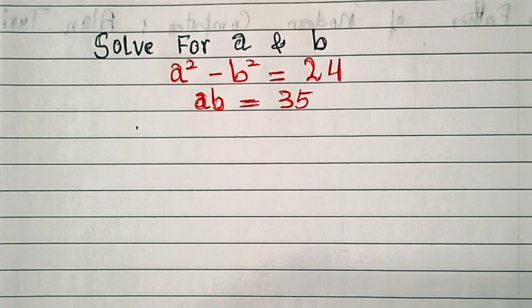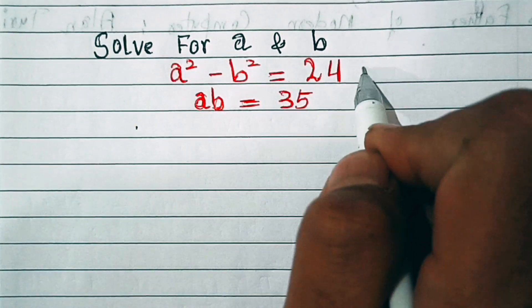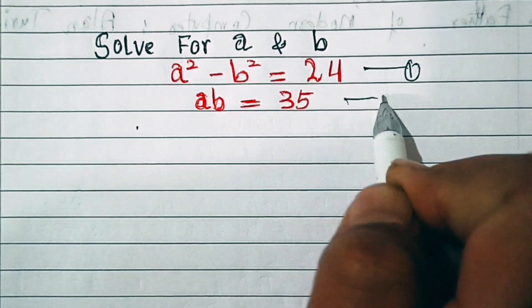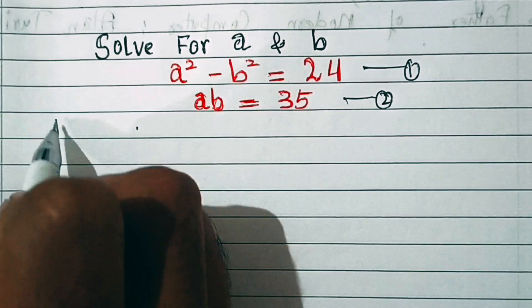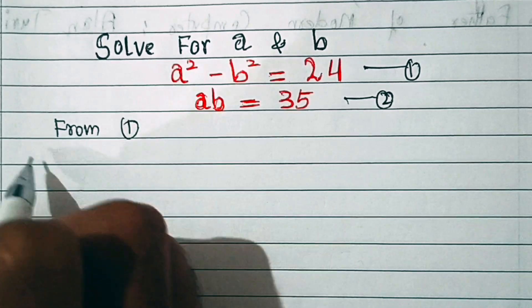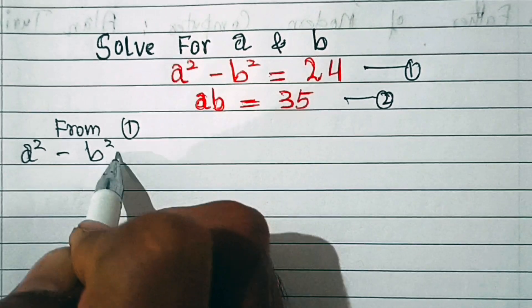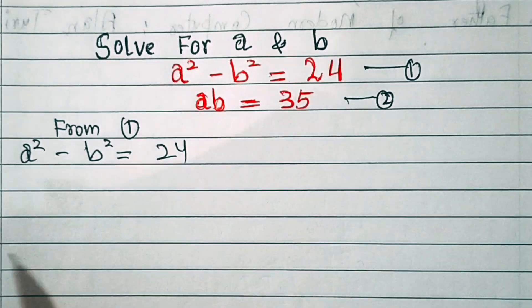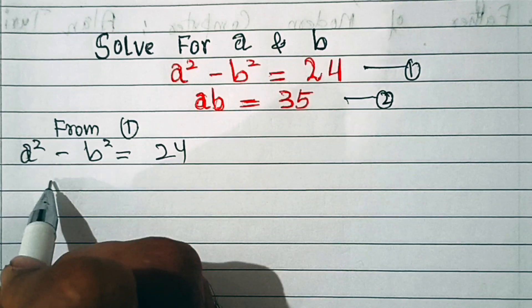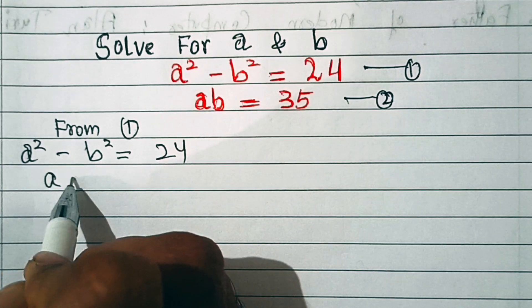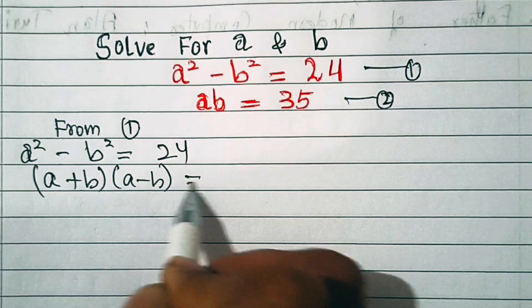So here we go. First, let's make this equation first and this is equation second. Now from equation first, we have a² - b² = 24. And here this is a difference of squares, which is equal to (a+b)(a-b) = 24.